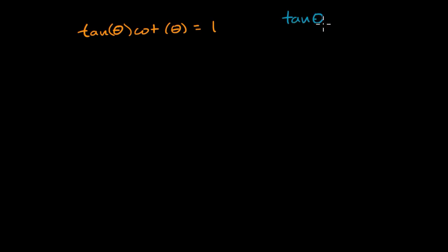We know that tangent of theta is equal to sine of theta over cosine of theta, and we know that cotangent of theta is just the reciprocal of that. Cotangent of theta is equal to cosine of theta over sine of theta.